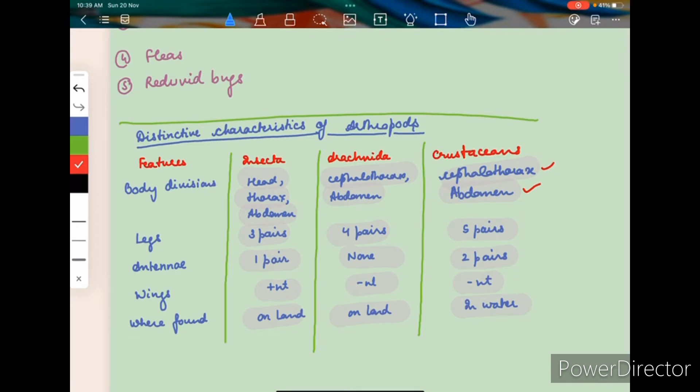First of all, we have the Insecta, which have got three body divisions: head, thorax, and abdomen. They have got three pairs of legs, one pair of antenna, and wings are present, and they are found on the land area.